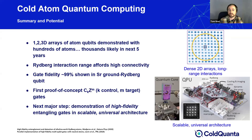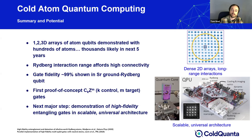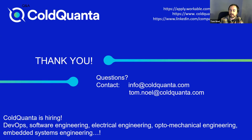There have been some first proof-of-concept results on implementing low-order versions of those gates — something to keep an eye on. Finally, I think the next major step for us and for the field is demonstrating high-fidelity entangling gates in a truly scalable universal architecture: dense 2D arrays with individual addressing in an arbitrary way. If you're interested in helping solve these challenges in bringing scalable cold atom quantum computing to a broad audience, we are hiring. Apply at the links in the upper right, and don't hesitate to reach out by email or on LinkedIn with any questions, particularly about the open positions.